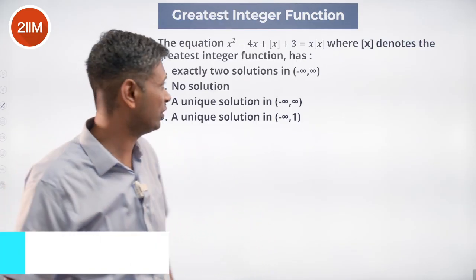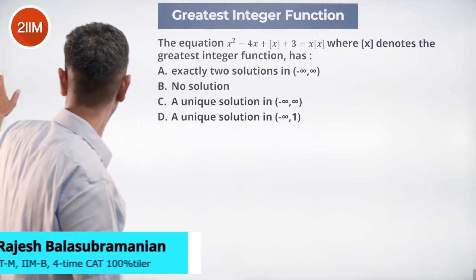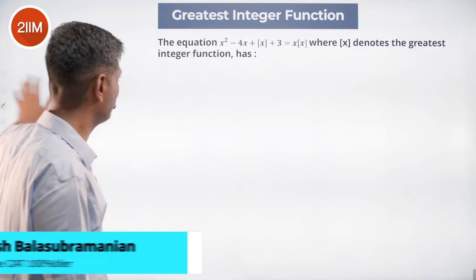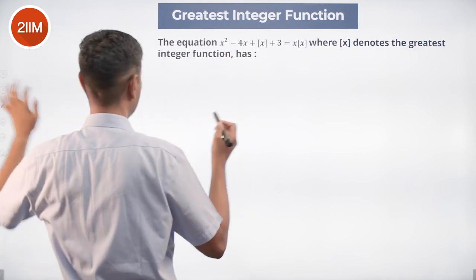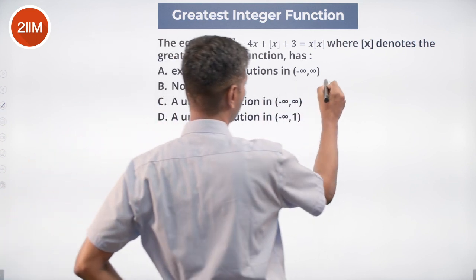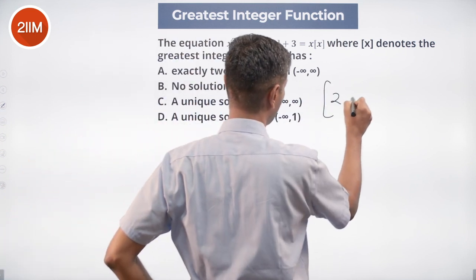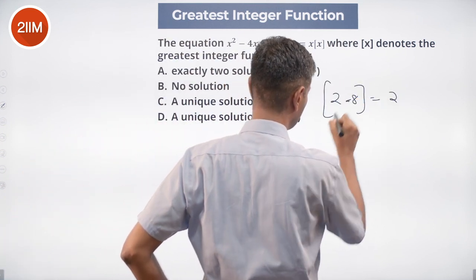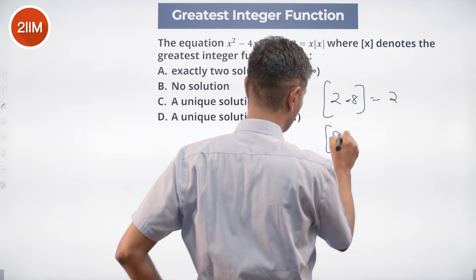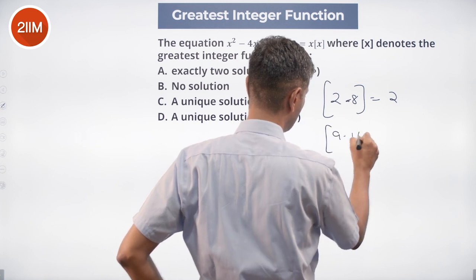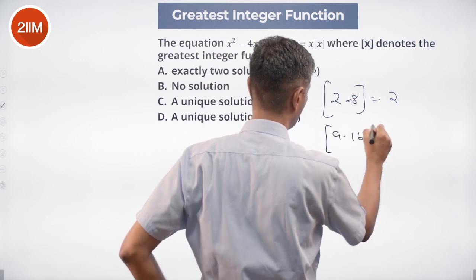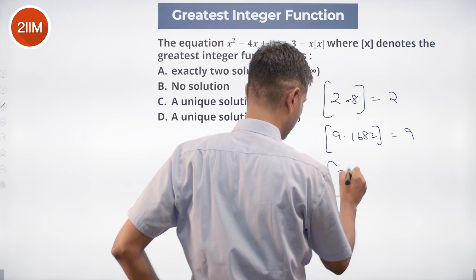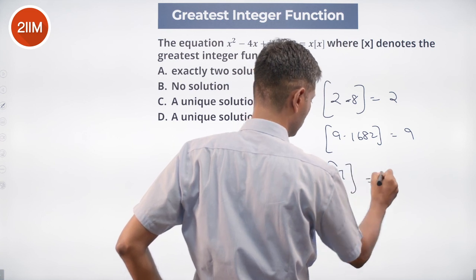Beautiful question — let's calibrate this. The greatest integer function is brilliant. Greatest integer of 2.8 is 2. Greatest integer of 9.1682 is 9. Greatest integer of 7 is 7.